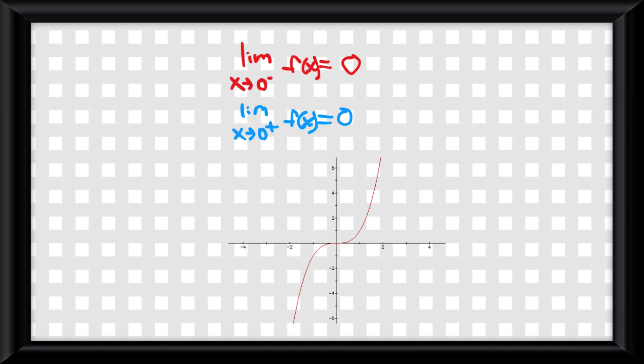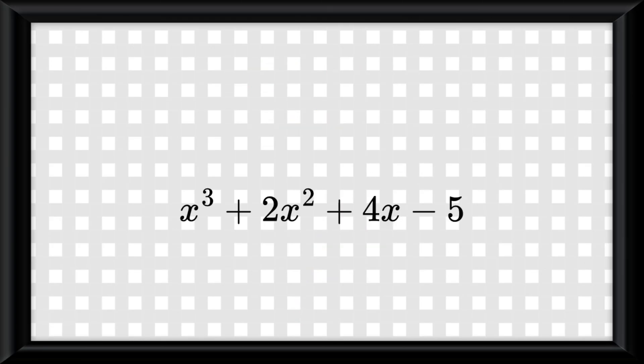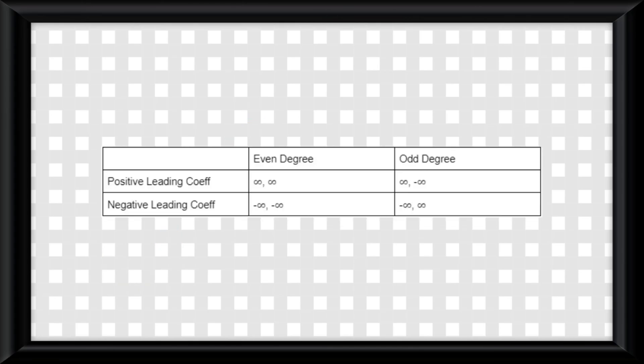Now let me teach you a trick to find end behavior just from an equation. All you need to find is the degree of the equation and whether or not the leading coefficient is positive or negative. Then just reference the table below.